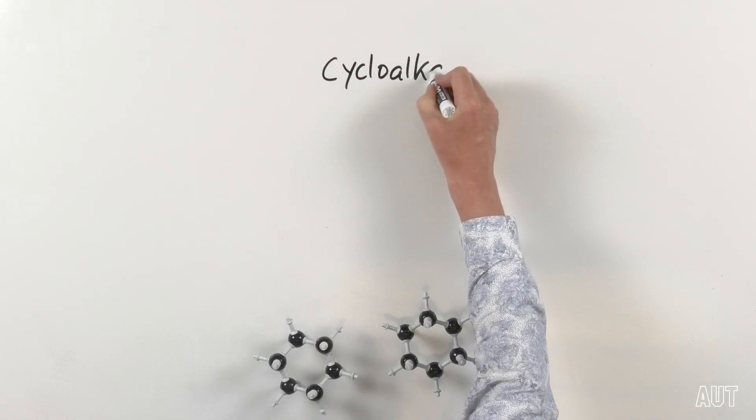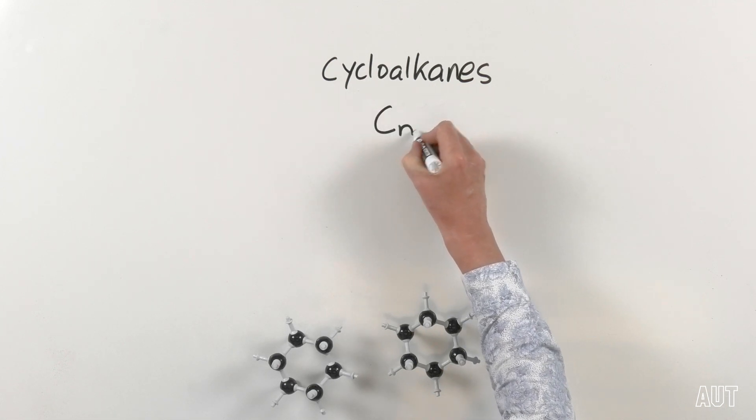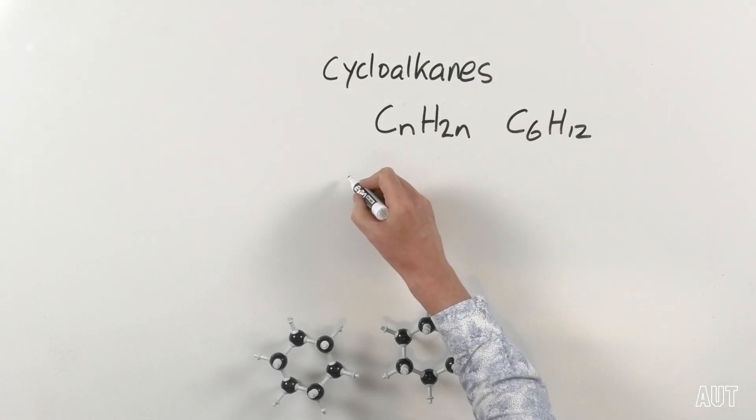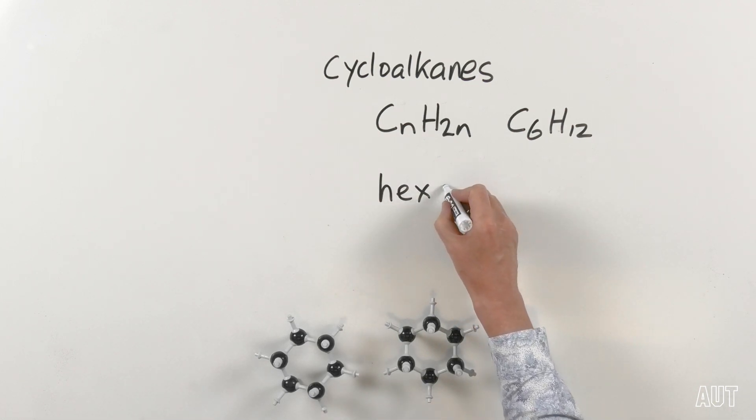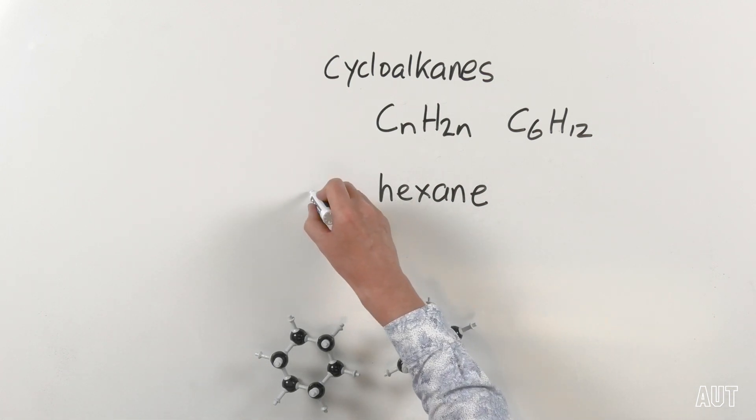However, there's one type of alkane where this general formula doesn't work. It works for alkanes that are long chains, but it doesn't work for alkanes that exist in rings — in other words, cycloalkanes. Cycloalkanes have the general formula CnH2n. The most important cycloalkane by a vast stretch has the chemical formula C6H12. If it's C6, counting in chemistry gives us hex, it's an alkane so it's ane, and the carbons are in a ring, so we call it cyclohexane.